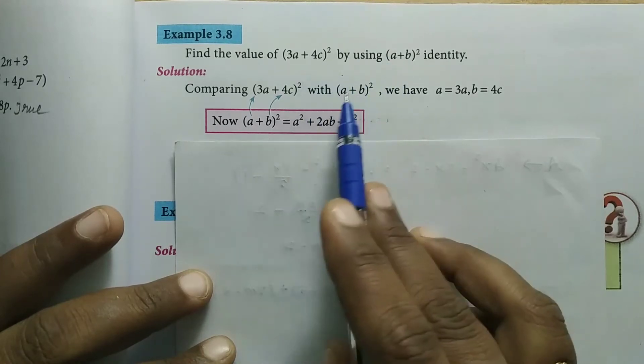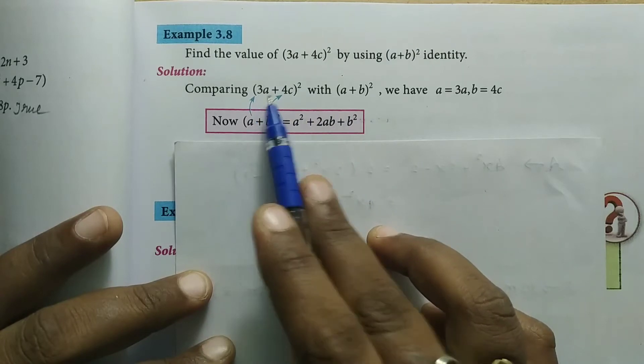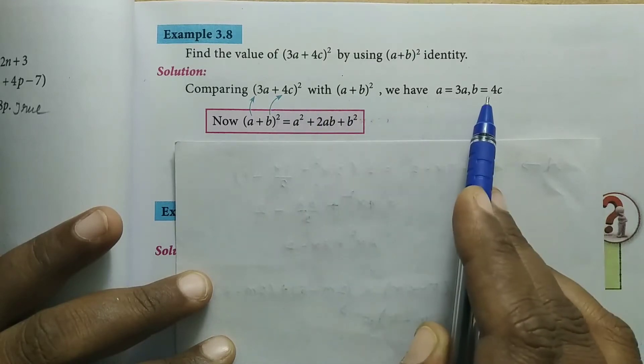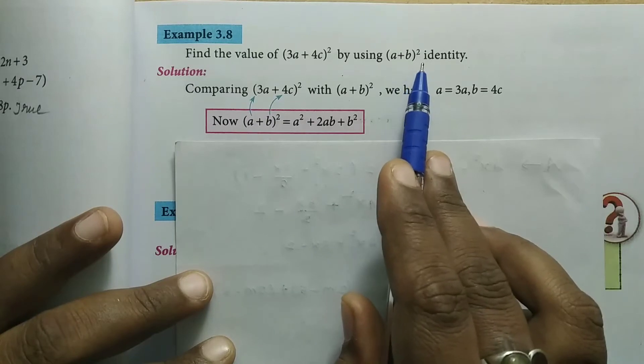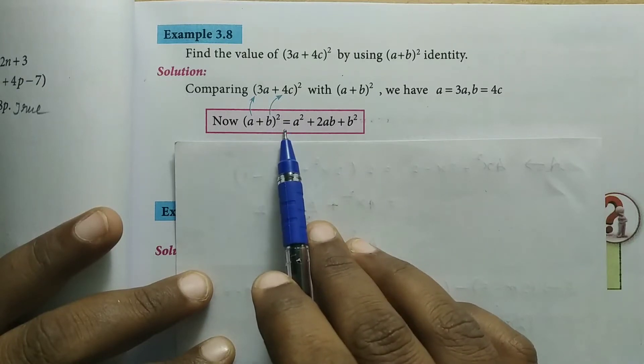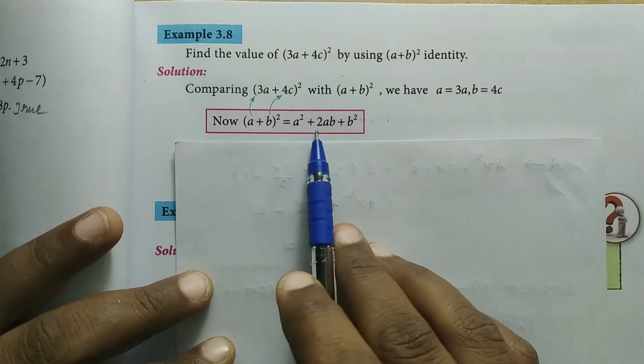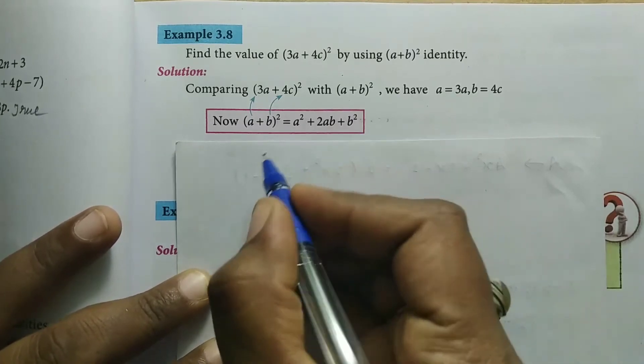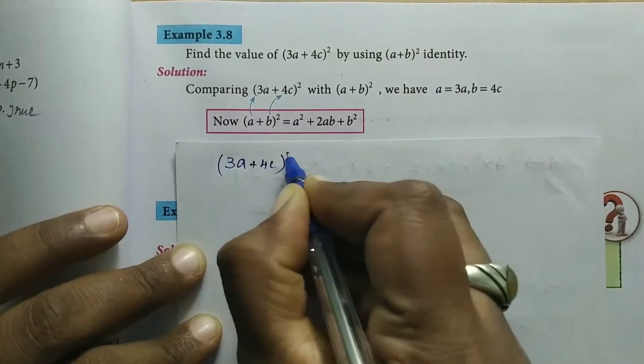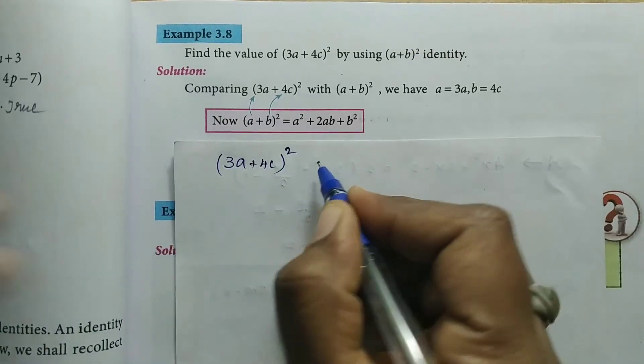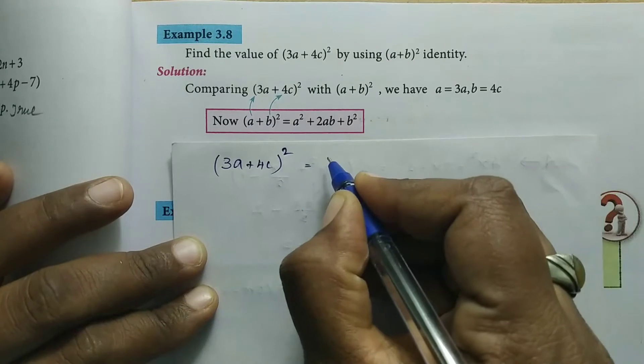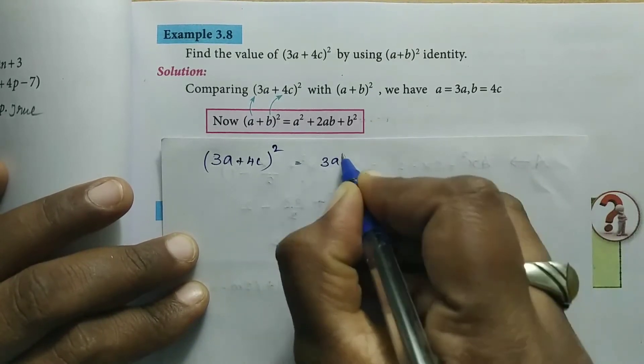Comparing the two, we identify that a equals 3a and b equals 4c. Using the identity a² + 2ab + b², we can expand (3a + 4c)².